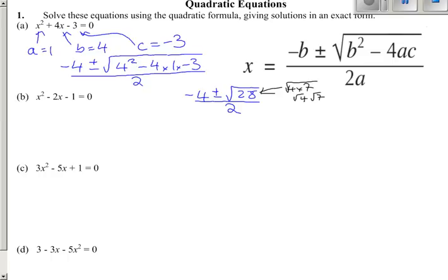The square root of 4 is 2. So this changes to minus 4 plus or minus 2 root 7 divided by 2.